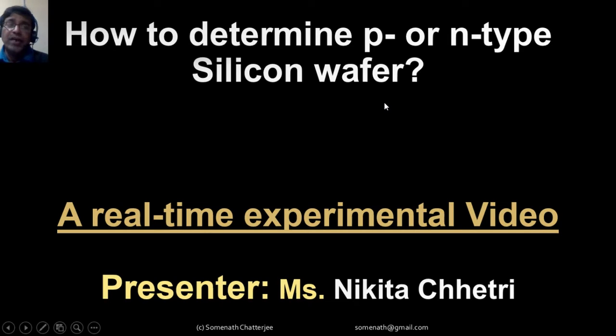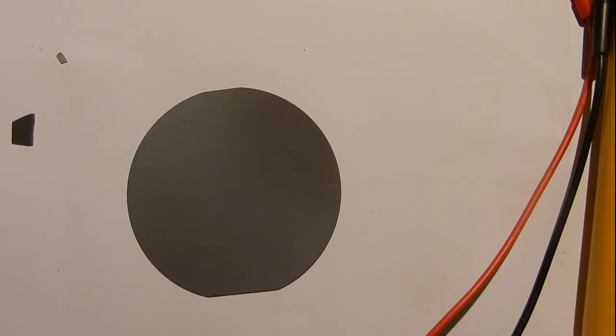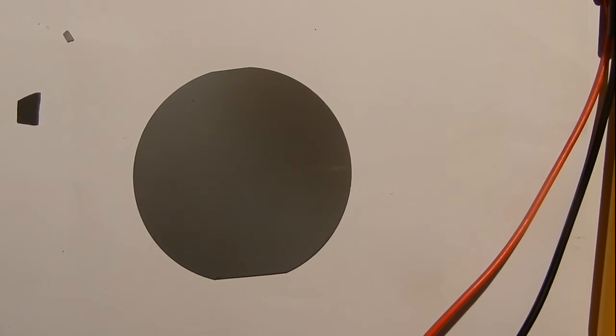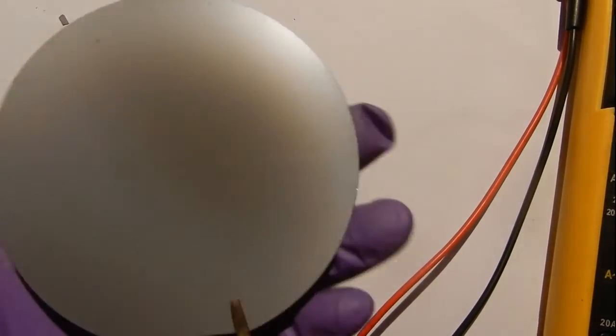To determine p or n-type silicon wafer by a real-time experimental video, please see the next one presented by Mr. Nikita Chitri. Good morning everyone. In this video we will learn about the hot probe method — a method by which we can determine whether a given wafer is p-type or n-type. This is the silicon wafer: this is the rough side and this is the polished side.